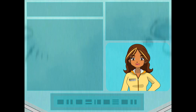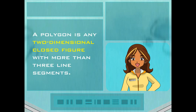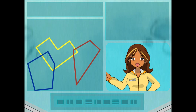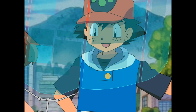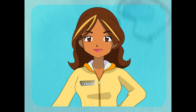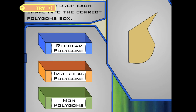Now don't forget, these are just the names of some specific types of polygons. Remember, a polygon is really just any two-dimensional closed figure with more than three line segments. So many different shapes are all polygons too. Wow! There must be an awful lot of polygons everywhere! That's right! Let's see if we can sort out some of the shapes around here. Click and drag the regular polygons into the regular polygon box, the irregular polygons into the irregular polygon box, and any shape that's not a polygon into the non-polygon box.